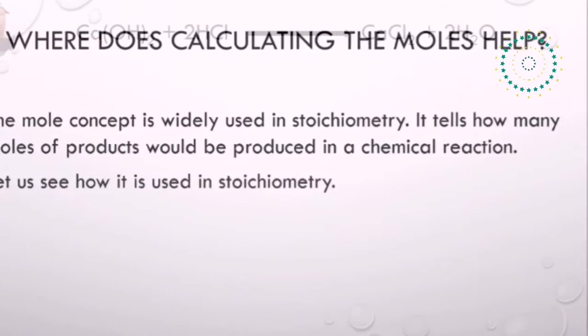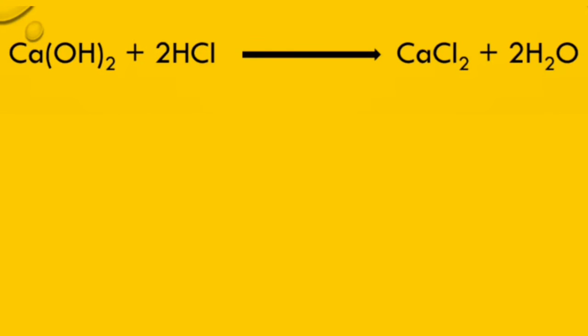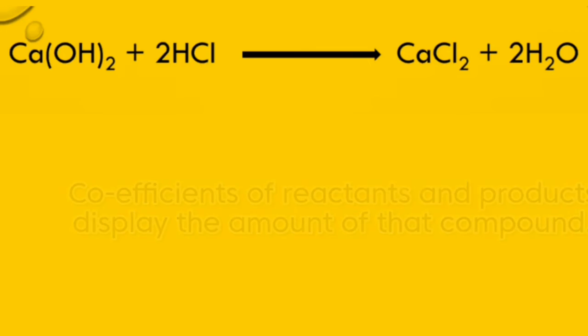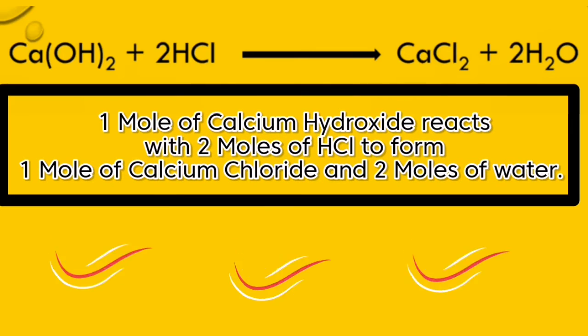Let us see how it is used. Let's see this chemical reaction involving calcium hydroxide and hydrochloric acid. Here the coefficients of the reactants and products talk about the amount of each reactant required to produce a particular amount of products. When one mole of calcium hydroxide reacts with two moles of hydrochloric acid...